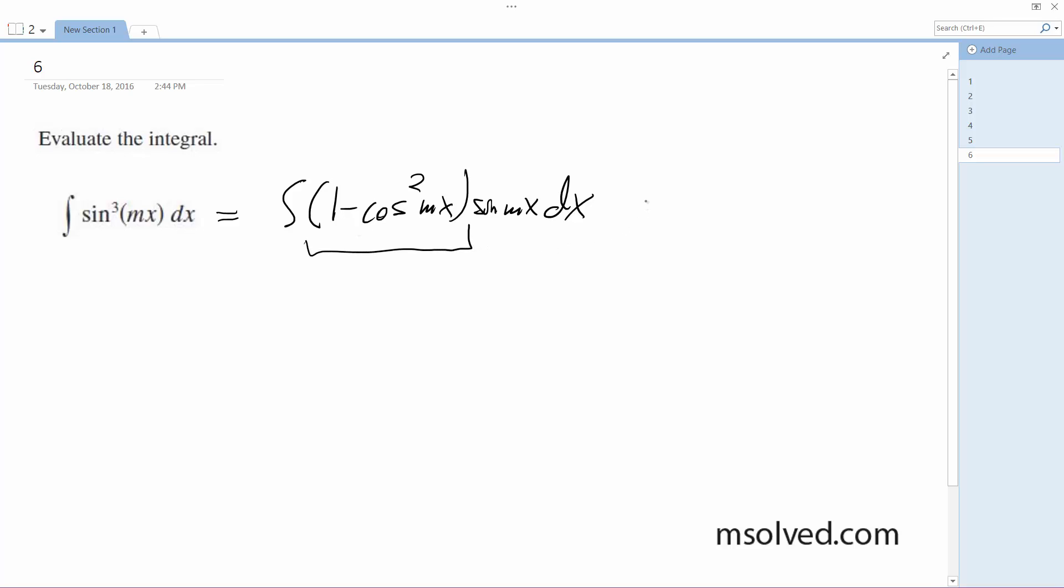So this becomes equal to negative 1 over m, our constant out front, 1 minus u squared du. And here we're going to make u equals cosine mx and du equals negative m sine mx dx.